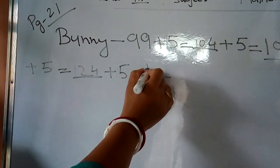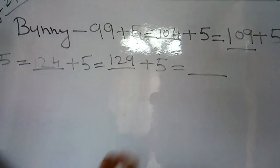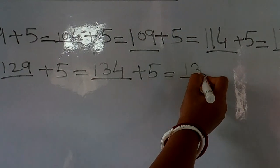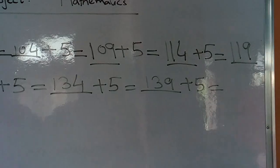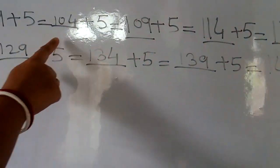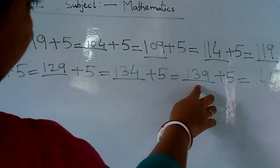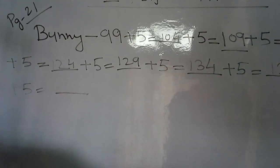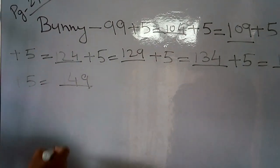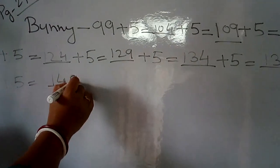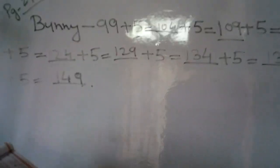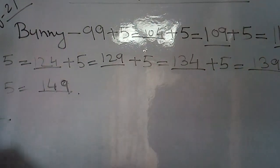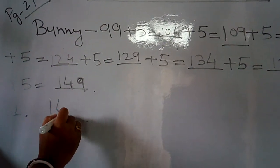Plus 5 gives you 129. Again plus 5 gives you 134. Plus 5 gives you 139. And 139 plus 5 gives you 144. Now count: 1, 2, 3, 4, 5, 6, 7, 8, and this is 9 — that means one more we have to find for the 10th. So 144 plus 5 gives you 149. That means Bani's 10th jump is on number 149. The first answer is 149.